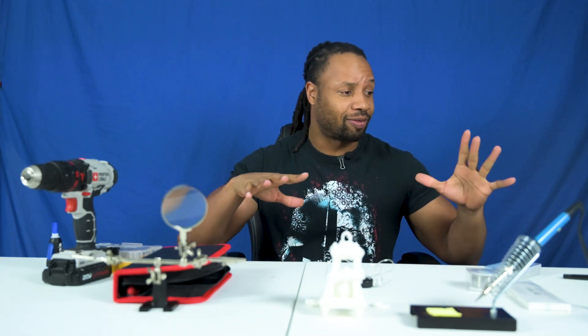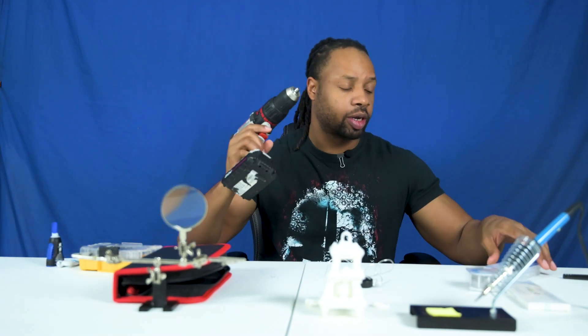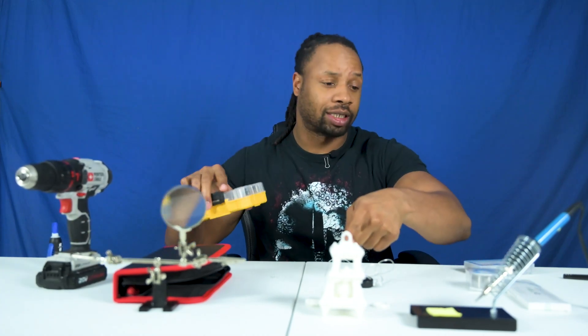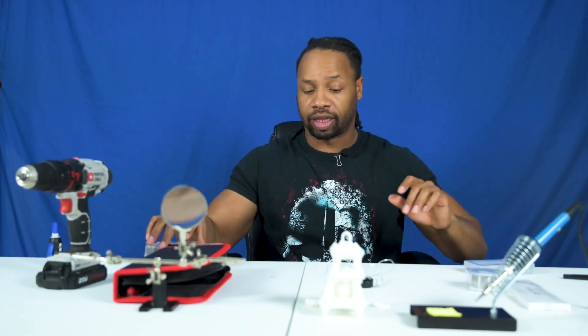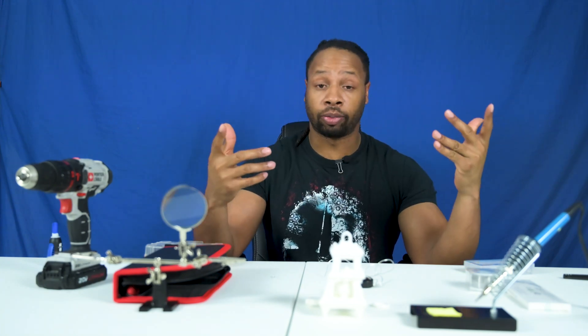As you can see, there's a ton of stuff laid out in front of me. You probably can't even see it all, but we have our drill here, we have some lights, we have drill bits, we have Thresh's lantern, soldering iron, a ton of things. As you can probably guess from all the things here, we're going to be trying our first attempt at putting some lights into a 3D printed item.